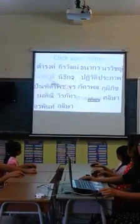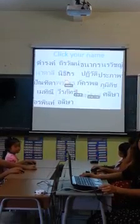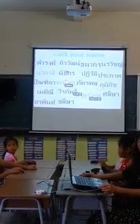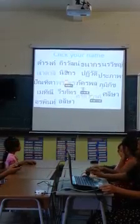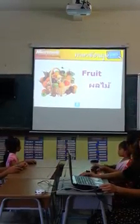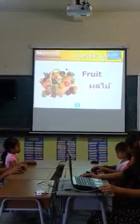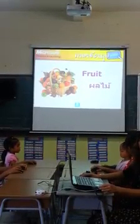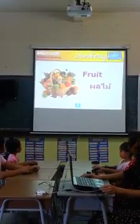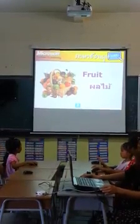Seventh, students click the name of one cell and the teacher clicks the right arrow key on the keyboard. Next, the teacher and students click the right arrow key on the keyboard if they want to learn a lesson.